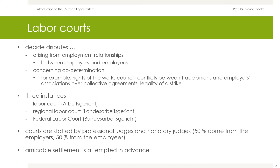Labor disputes usually arise from contracts between employees and employers and are therefore actually conflicts under civil law. However, there is a special instance — the labor courts. In addition to disputes arising from employment relationships, labor courts also have jurisdiction over disputes concerning collective determination, concerning both the rights of works councils and conflicts between trade unions and employer associations over collective agreements and the legality of a strike. The labor courts have three levels of jurisdiction: the first instance is the Arbeitsgericht, the second is the Landesarbeitsgericht, and the highest is the Federal Labor Court, Bundesarbeitsgericht, seated in Erfurt.